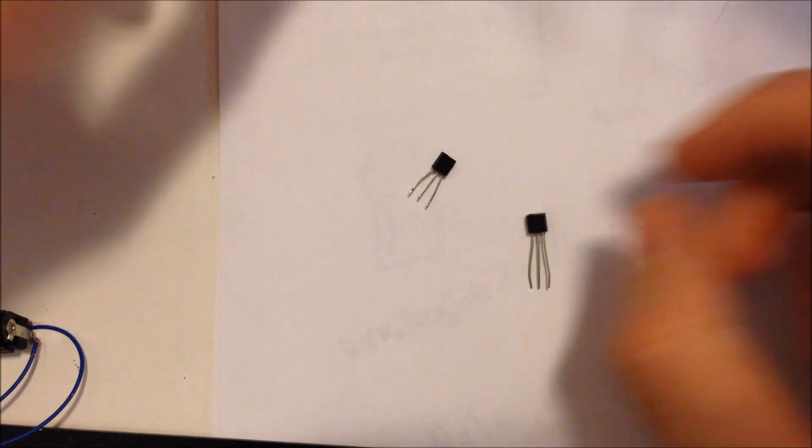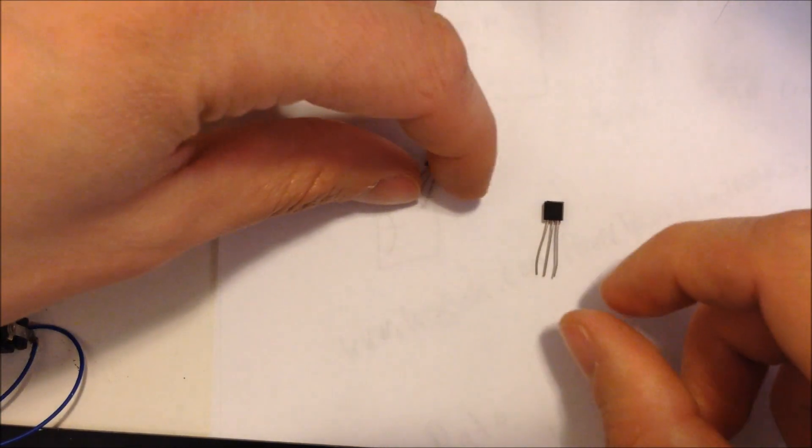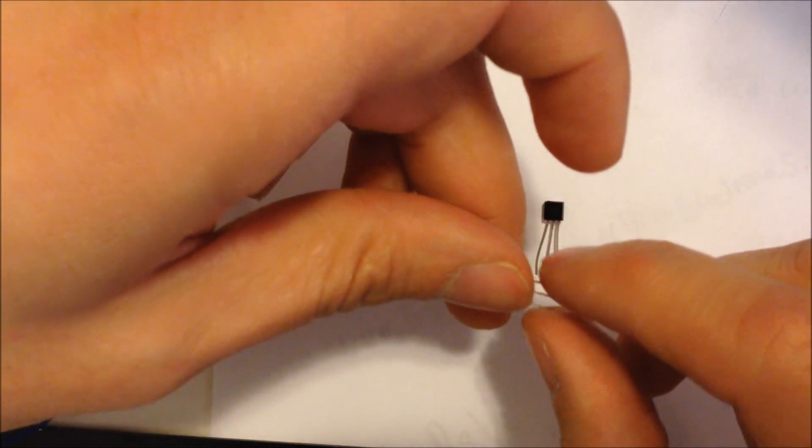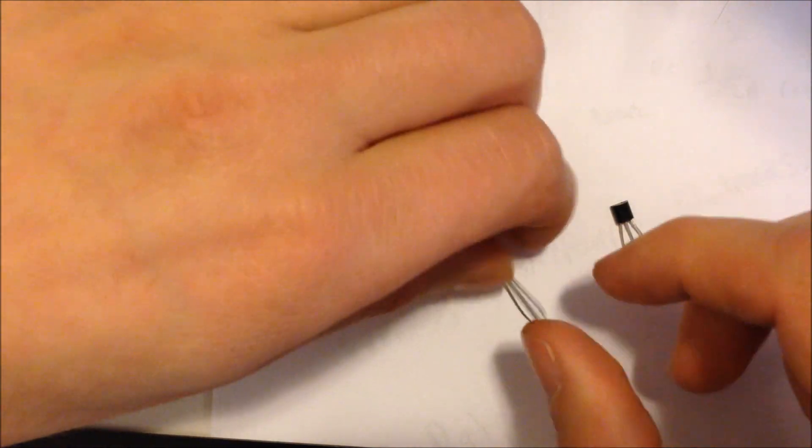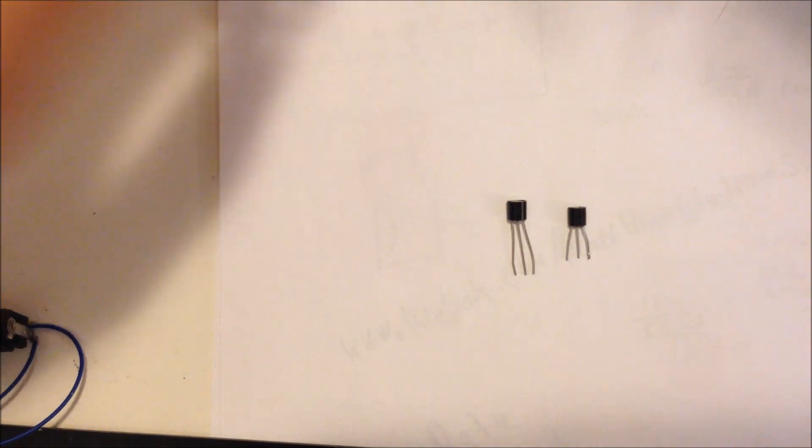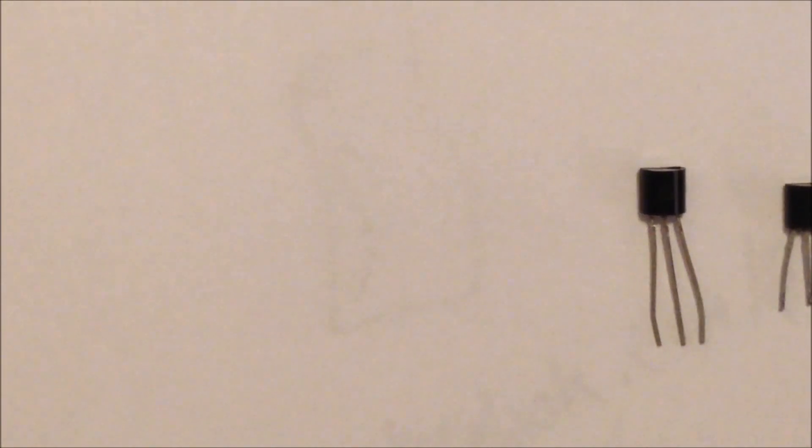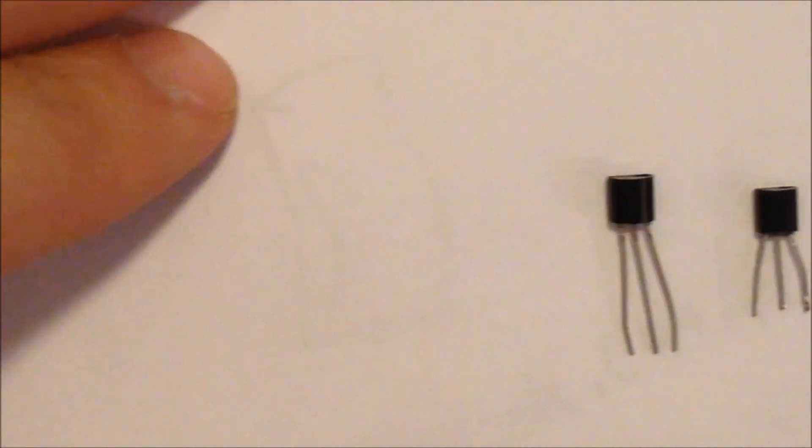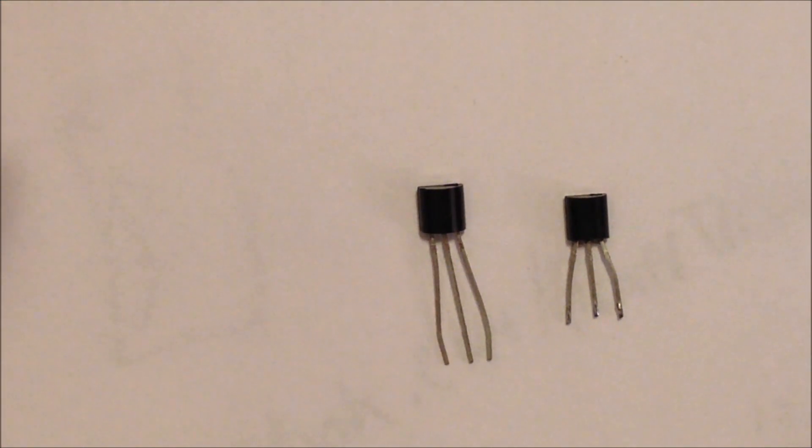So first of all, here are some transistors, two of them. The first thing we want to do in order to be able to use these is identify if they're NPN or PNP. Now, if you just take a look at these transistors here, you'll notice that they look pretty much identical. They are identical.